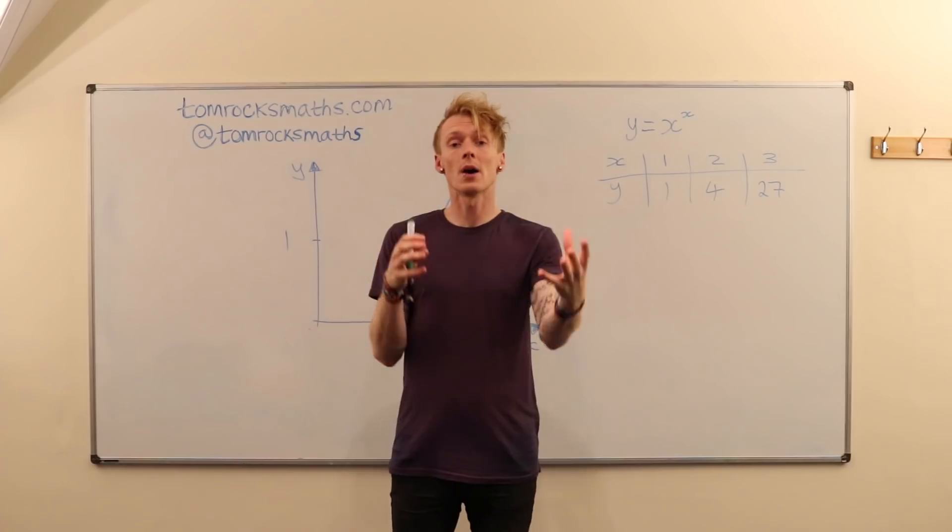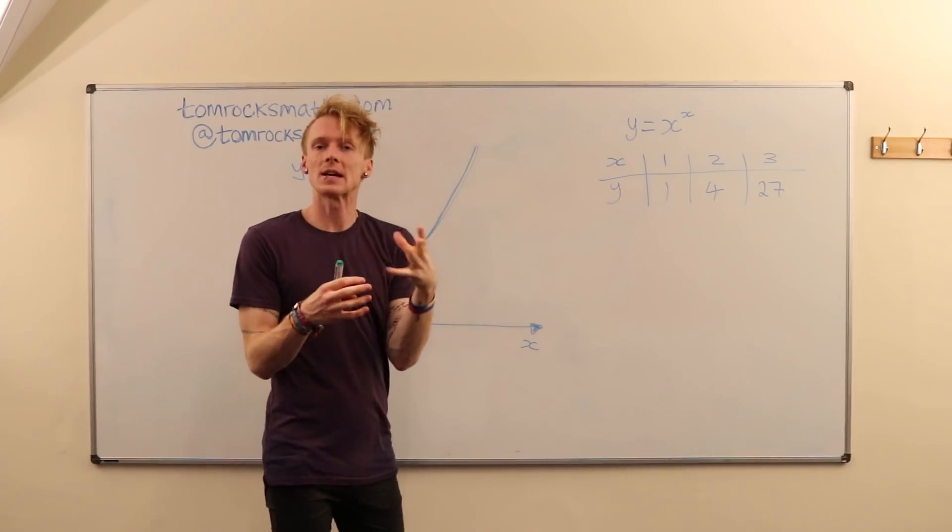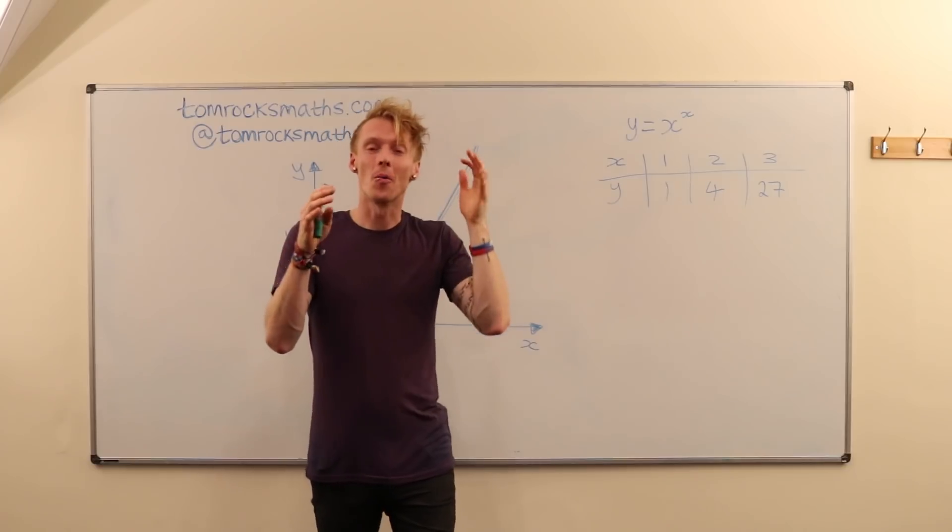Now we know what happens with the graph for x greater than 1, we can start to think about the difficult bit. What is happening between 0 and 1?